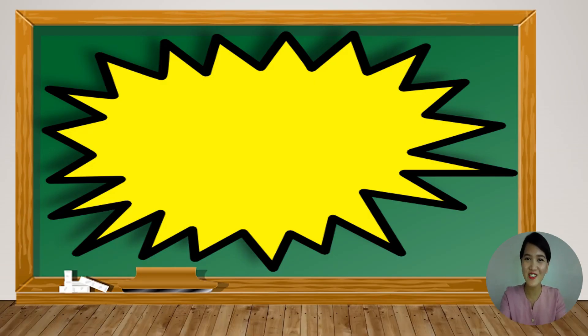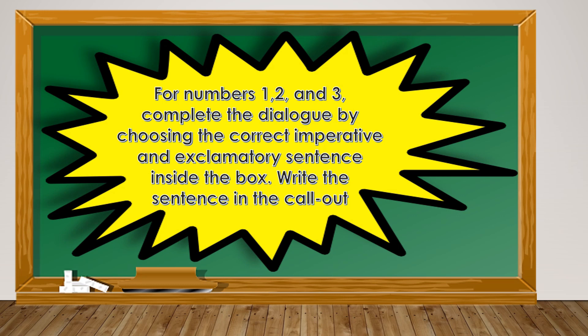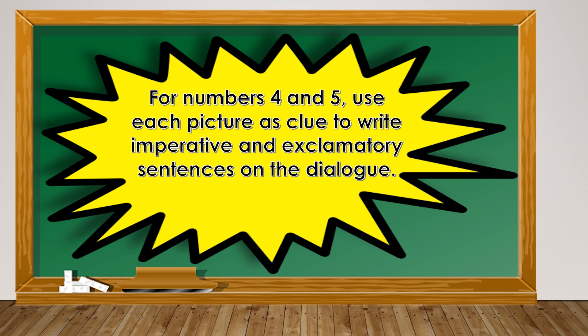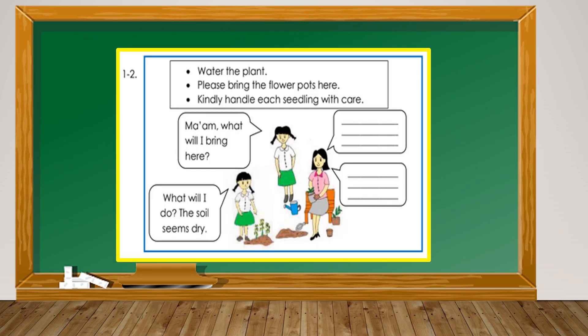Did you get all the answers? You're almost done! Here's another activity that will help you understand our lesson further. For numbers 1, 2, and 3, complete the dialogue by choosing the correct imperative and exclamatory sentence from inside the box. Write the sentence in the callout. For numbers 4 and 5, use each picture as a clue to write imperative and exclamatory sentences in the dialogue.